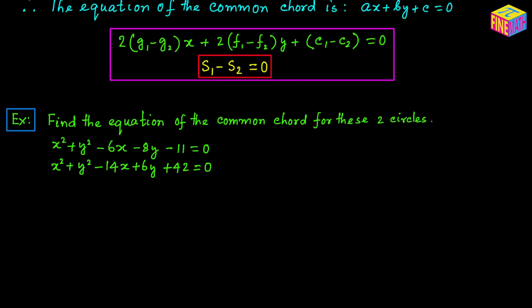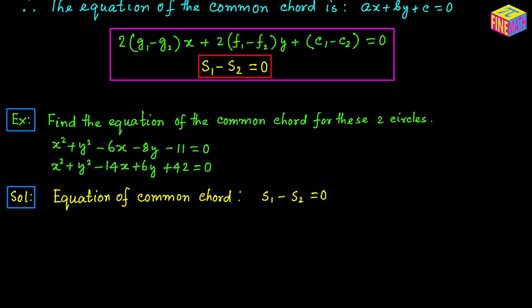Next, we are going to take an example. Find the equation of the common chord for these two circles: x squared plus y squared minus 6x minus 8y minus 11 equals 0, and x squared plus y squared minus 14x plus 6y plus 42 equals 0. We have just seen that the equation of the common chord can be noted as s sub 1 minus s sub 2 equals 0. Let's assume the first equation is s sub 1 equals 0 and the second is s sub 2 equals 0.